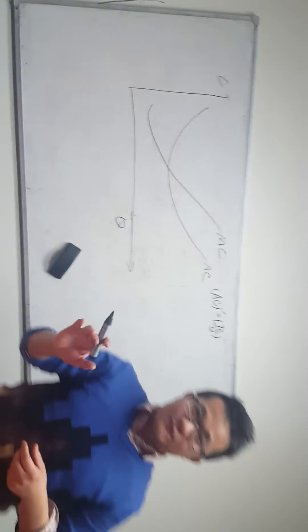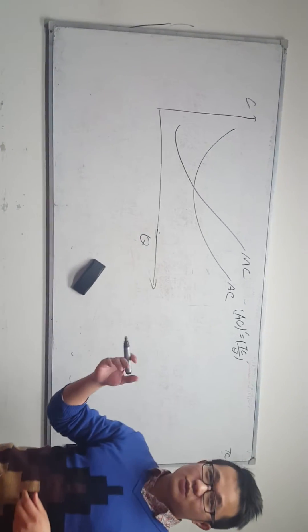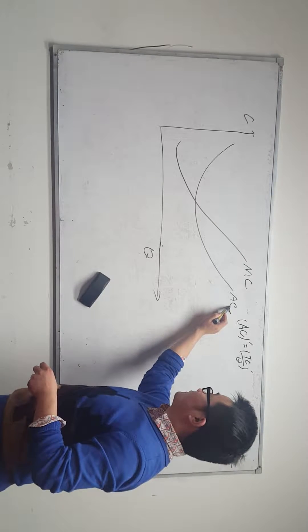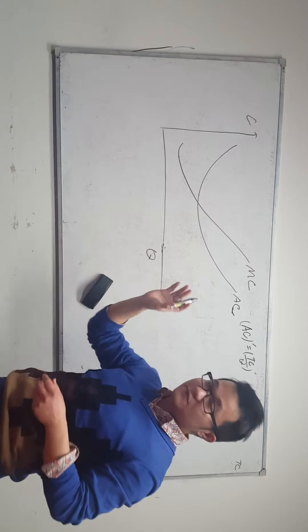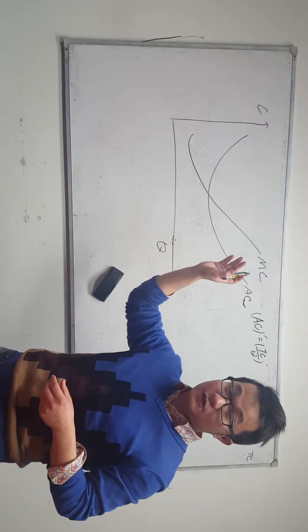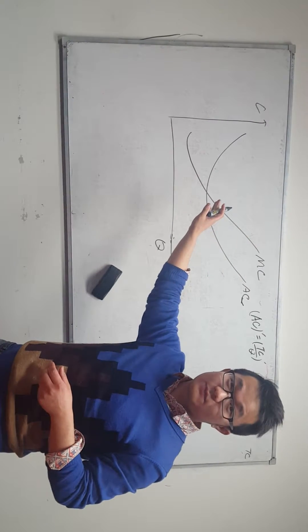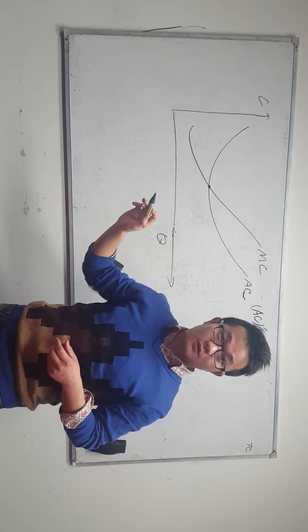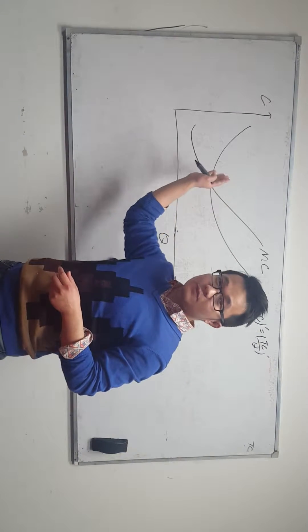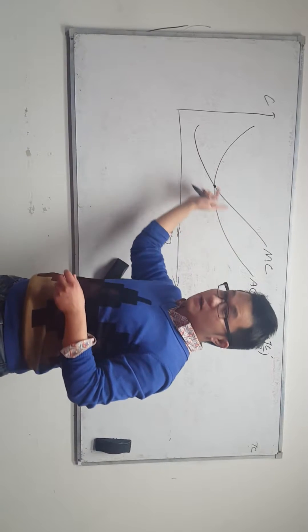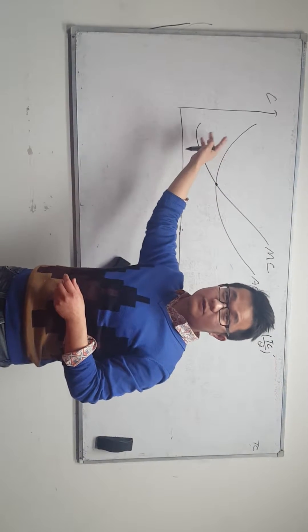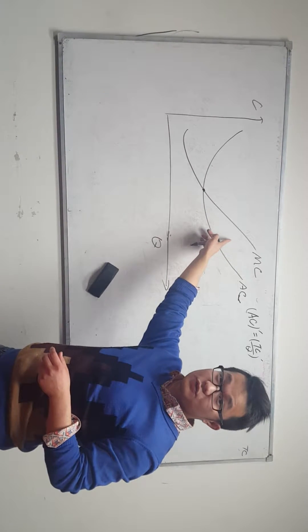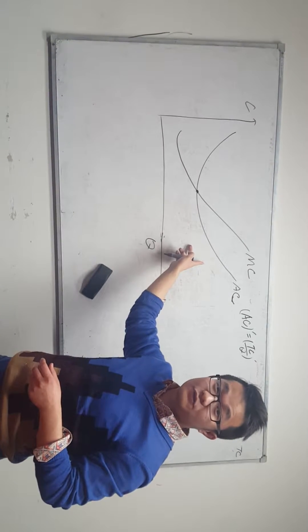We are going to talk about the average cost and the relationship between marginal cost. When we look at average cost, there is a very important thing to remember about the marginal cost. It will go through the minimum point of average cost. On the left-hand side of the minimum point, marginal cost is lower than average cost, and on the right-hand side of the minimum point, marginal cost is higher than average cost.